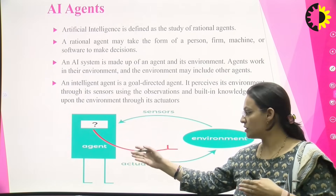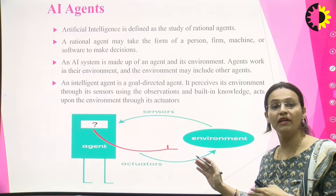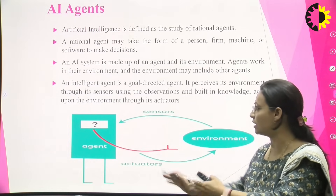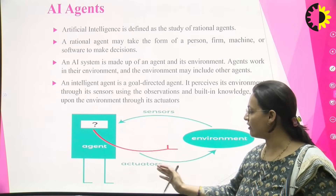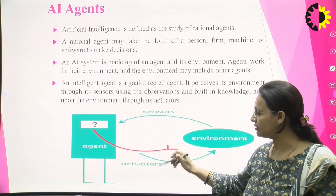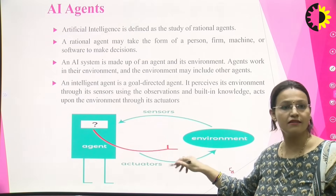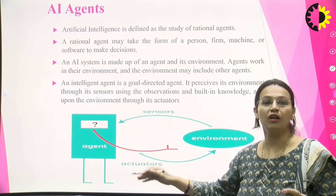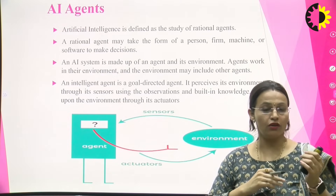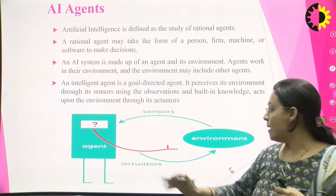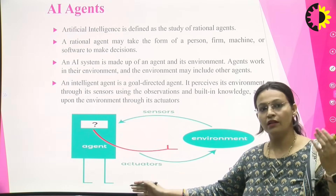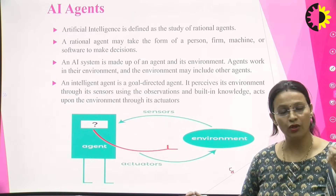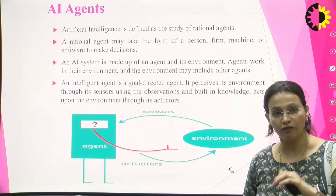In a machine, the agent is surrounded by some machine environment. This environment has two factors: actuators and sensors. Sensors are basically used by the agent to sense the environment, or to perceive information or knowledge from the environment. Actuators are the ones that will make the agent understand what it has perceived and what it wants to reflect back to the environment.